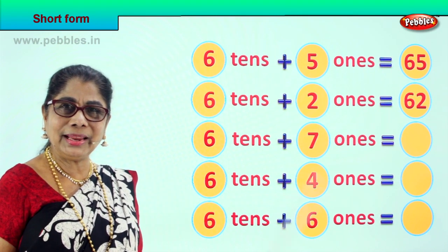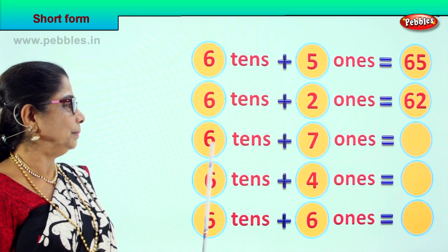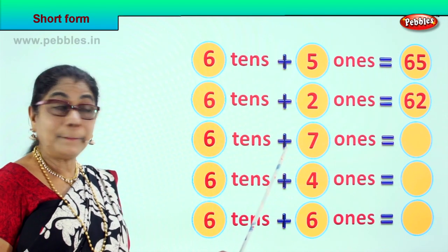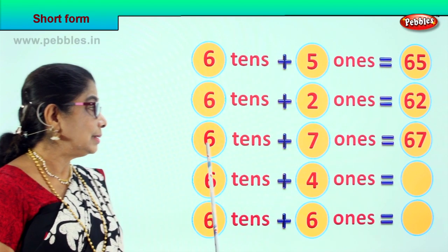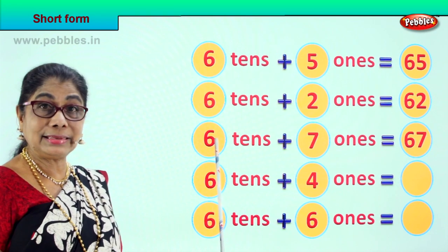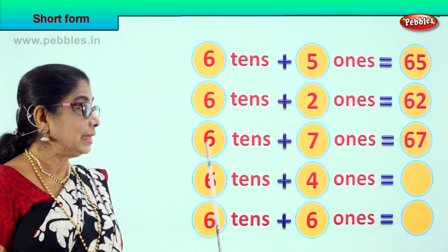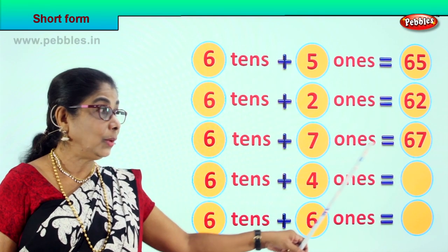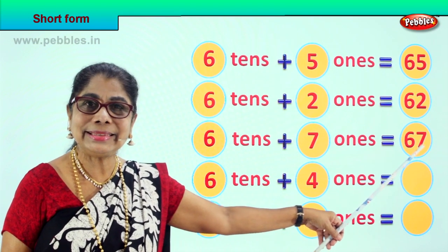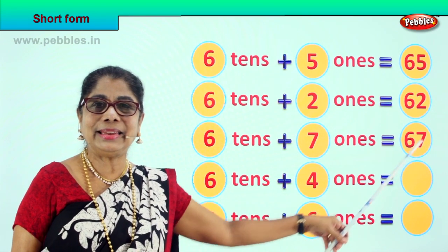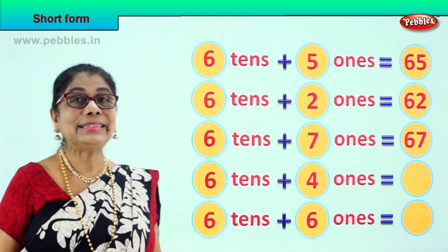Are you enjoying doing the short form? 6 tenths plus 7 ones. 6 tenths is 60 plus 7. 6 tenths plus 7 ones is equal to? 67. 6 tenths plus 7? 67.